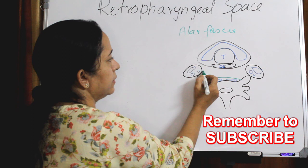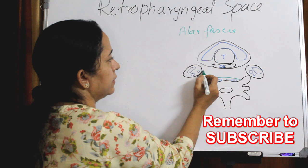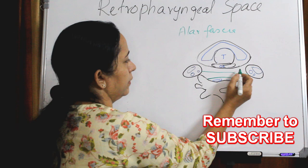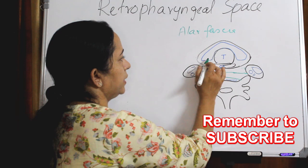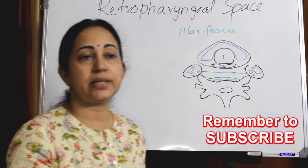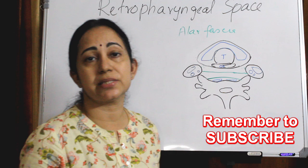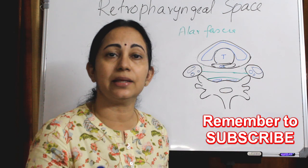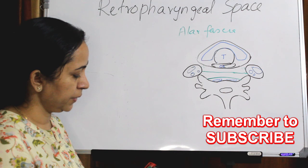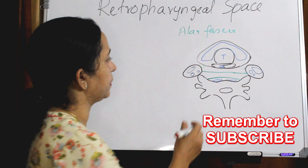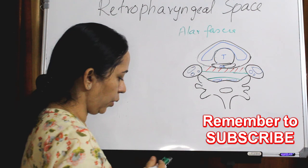A thin layer of prevertebral fascia — called the alar fascia — extends between the carotid sheath on either side. This actually divides the retropharyngeal space into a true retropharyngeal space and a dangerous space. The alar fascia extends between the two carotid sheaths and divides the retropharyngeal space into these two compartments.